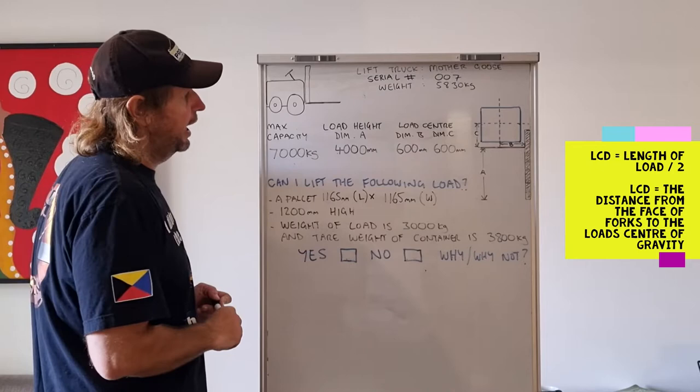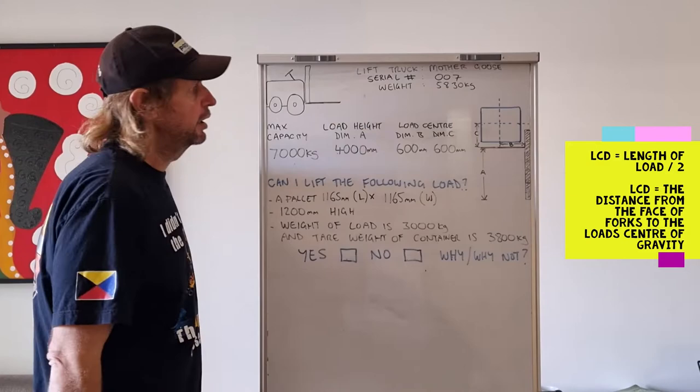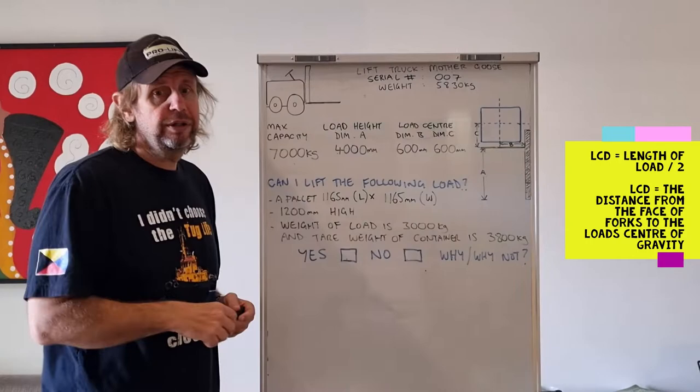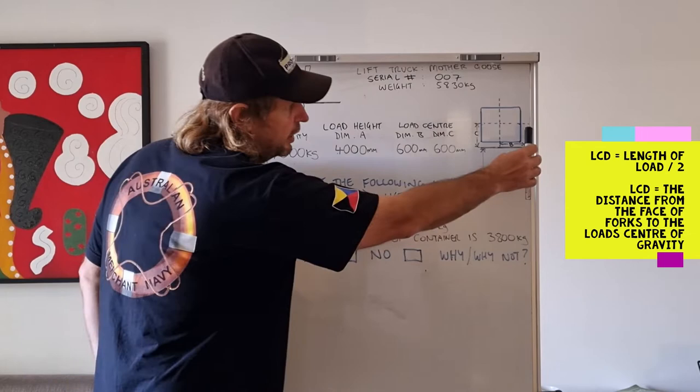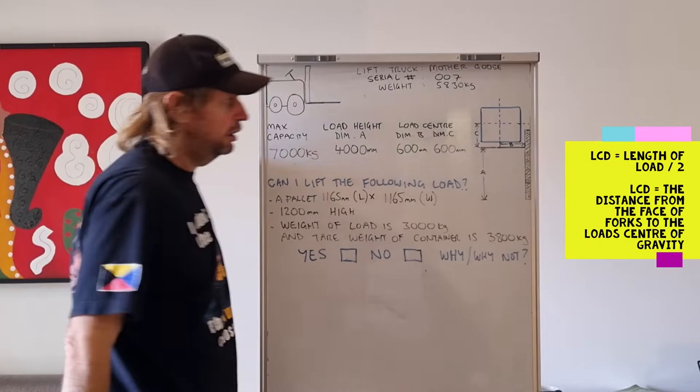And load height is dimension A. The load height there is how high it can lift that 7,000 kilos. This one here, load center distance. The load center distance is, according to WorkSafe and your manufacturer's instructions, the distance from the face of the forks to the load center of gravity. So the load backrest there, if the load is hard up against that load backrest, it is the distance from the center of the load to the load backrest.